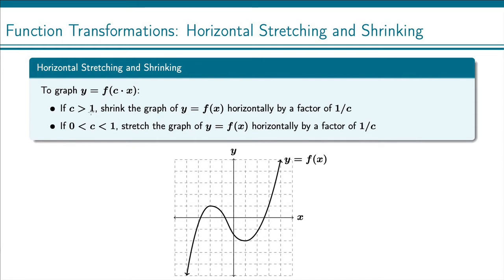If our constant is greater than 1, we actually have a horizontal shrink. Now this is a little confusing, but if you think about multiplying the x value by a number bigger than 1, then that's going to be a larger input. And so with this function, we're going to take the function of a larger input and place it at our original input.